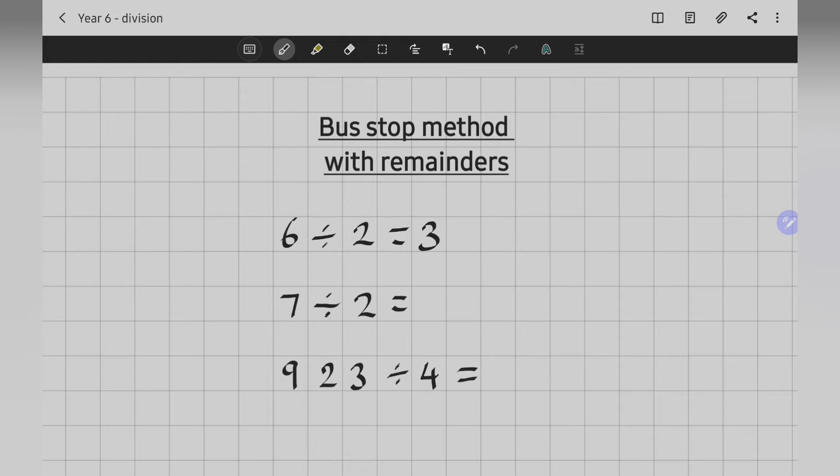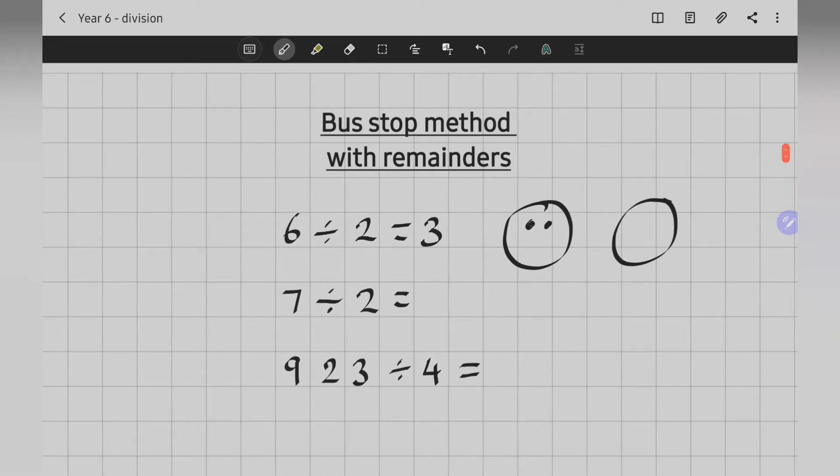Look at the first sum here. 6 divided by 2 is 3. Really easy because I know that 3 times 2 is 6. You might have sorted them into groups. 6 sorted into 2 groups. I've got 3 in each group.